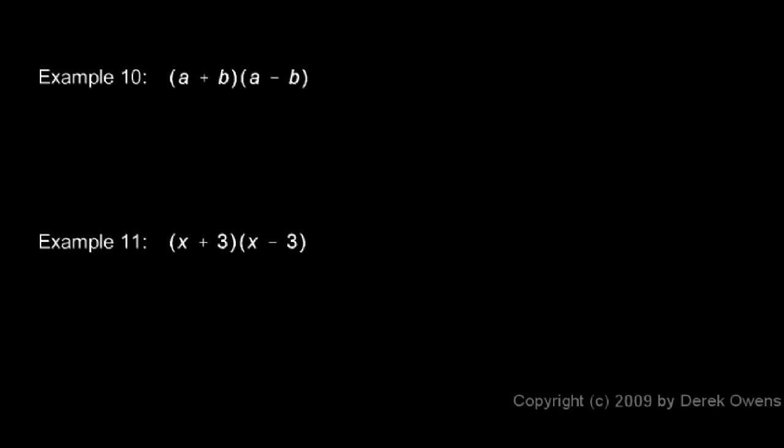In example 10, we're multiplying a plus b times a minus b. So again, we do a FOIL. The first terms give us an a squared. The outer terms, a and minus b, when multiplied together, give us a minus ab.